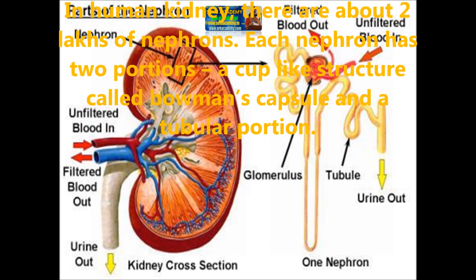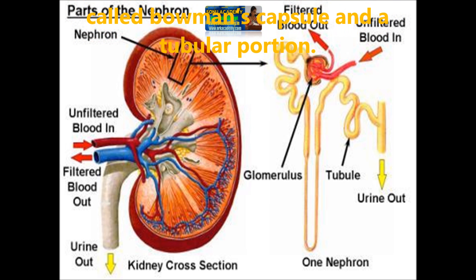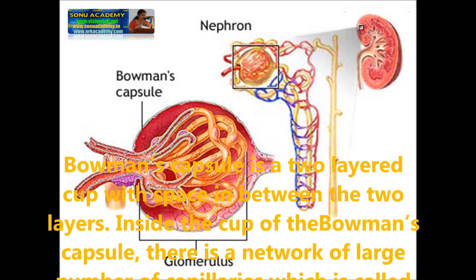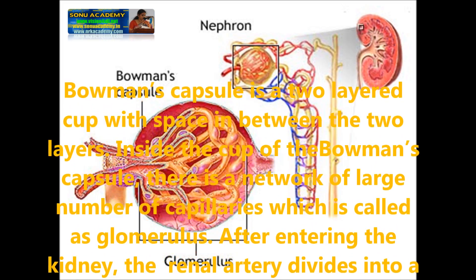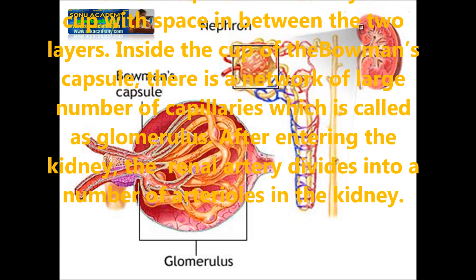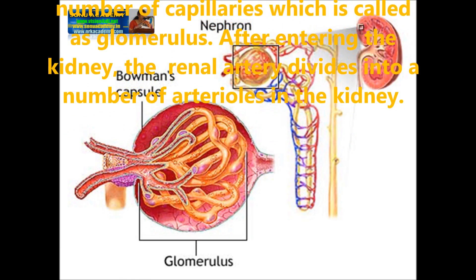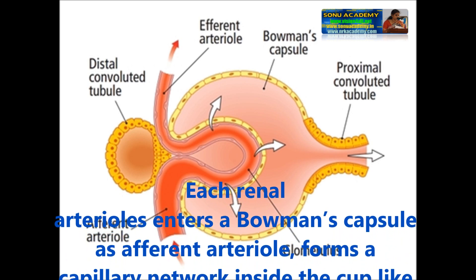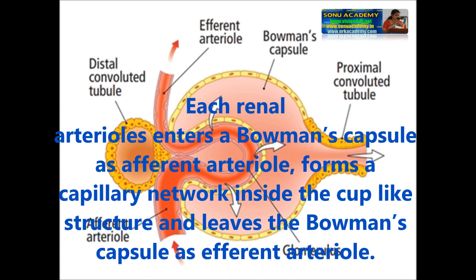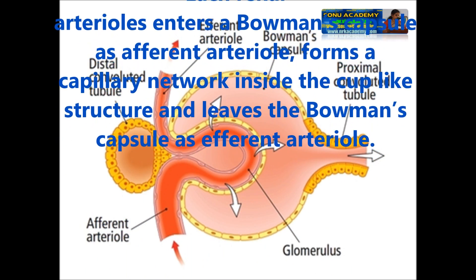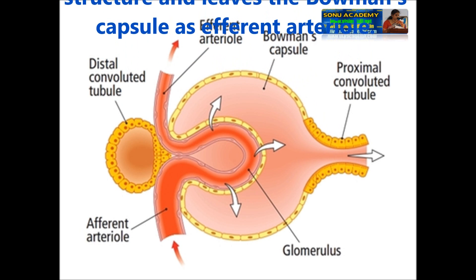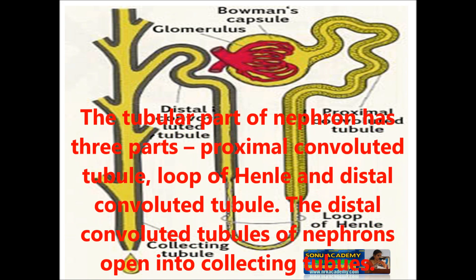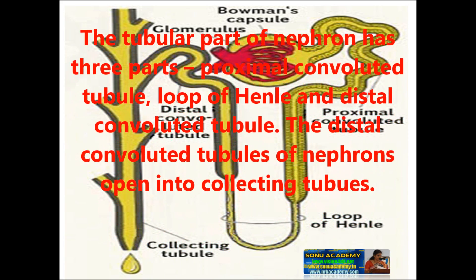Each nephron has two portions: one is a cup-shaped structure called Bowman's capsule, and a tubular portion. Bowman's capsule is a two-layered cup with space between the two layers. Inside the cup of Bowman's capsule, there is a network of a large number of capillaries called the glomerulus. After entering the kidney, the renal artery divides into a number of arterioles. Each arteriole enters the Bowman's capsule as an afferent arteriole, forms a capillary network inside the cup-like structure, and leaves as an efferent arteriole. The tubule part of the nephron has three parts: the proximal convoluted tubule, the loop of Henle, and the distal convoluted tubule.